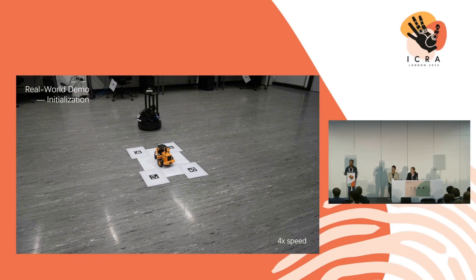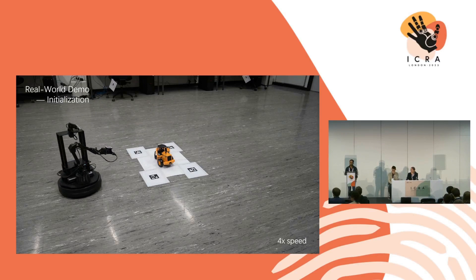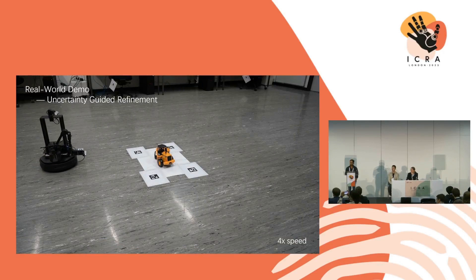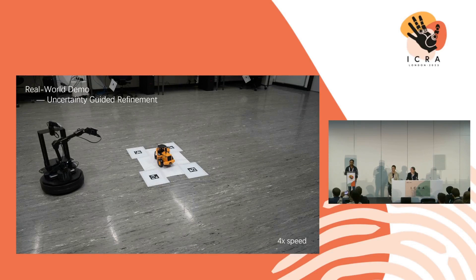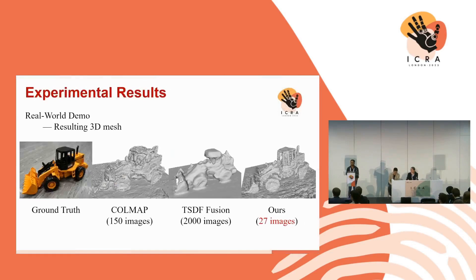Here is a real-world demonstration. We initialize using a robot coarse scan, and once we initialize the coarse reconstruction, we let the robot figure out which possible pose to move to so that it can have as much information gain as possible. It iterates over time, and we get reconstruction results as good as using explicit representation with traditional structure-from-motion pipelines or TSDF fusion. With just 27 images, we have reconstruction results better than previous methods.